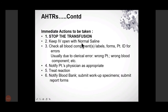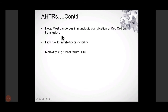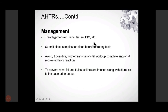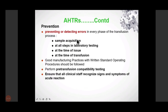Management: stop the transfusion, keep IV line open with normal saline, check all blood component labels, forms, and patient ID for errors. Usually it is a clerical error. Notify physicians appropriately, report to the blood bank, and submit report forms and specimens. It is a high risk of morbidity and mortality. Prevention: detect errors in every phase — sample acquisition, testing, issuing, and during transfusion. Ensure clinical staff recognize symptoms of acute reaction.